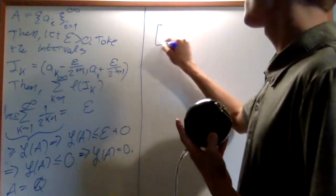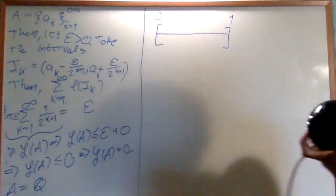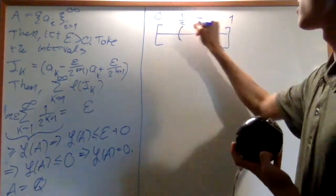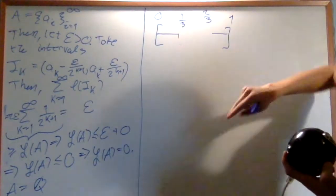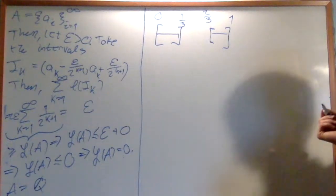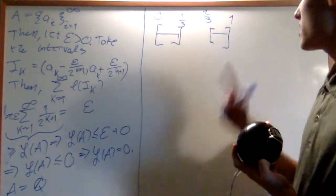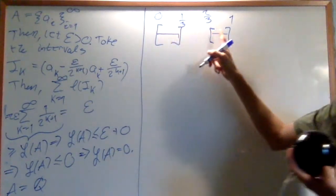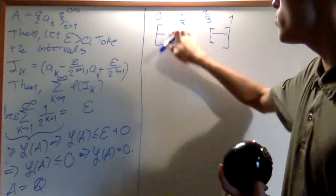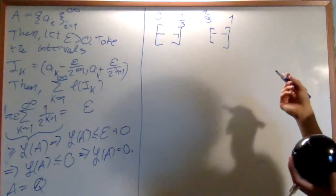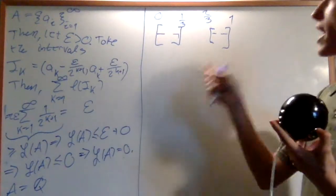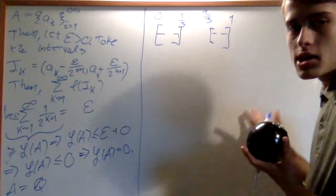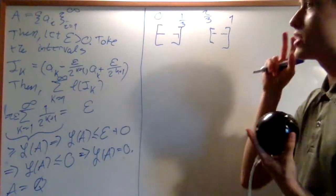So now let's introduce the Cantor set. What is it? Well, I take the interval [0, 1] and remove the middle third — the open interval from 1/3 to 2/3. That gives a new closed set. Then in each remaining piece I remove the middle thirds again: from 1/9 to 2/9 on the left, and 7/9 to 8/9 on the right. I continue this process infinitely many times, and the set that remains is the Cantor set — removing the middle thirds of the closed intervals all the way down.